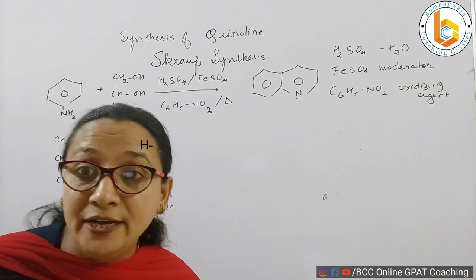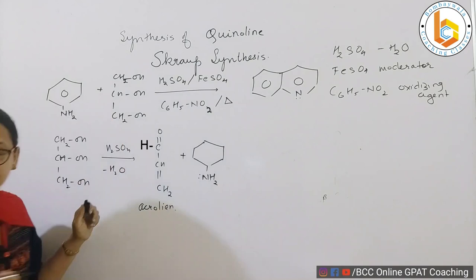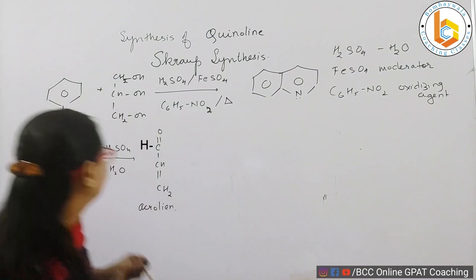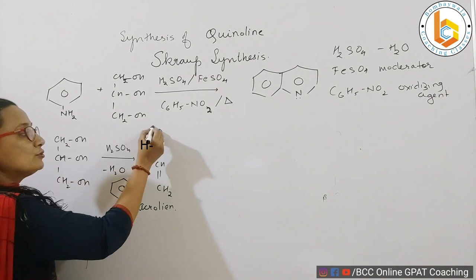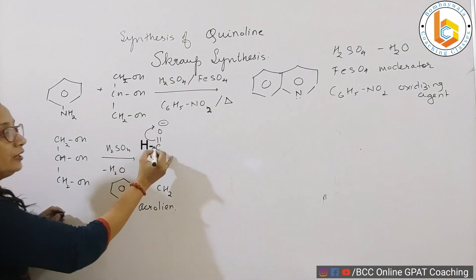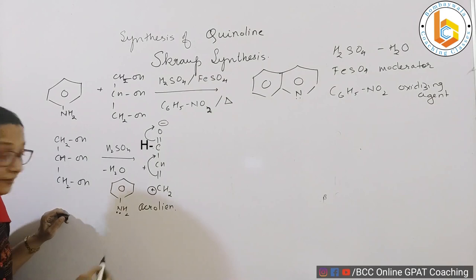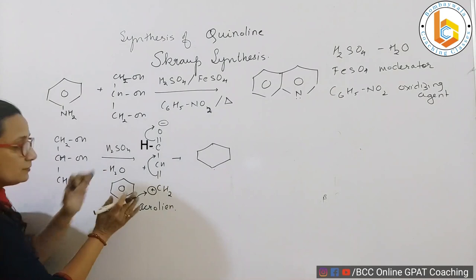Now this acrolein is going to show 1,4-addition reaction. Have a look. This is my aniline. I am writing aniline on this side of the board. This is my aniline NH2. Now what is happening? See: shift of electrons towards this oxygen, oxygen will bear a negative charge, and to nullify this positive charge which is coming on this carbon, the double bond will move to become another double bond there, and on this carbon there will be a positive charge.